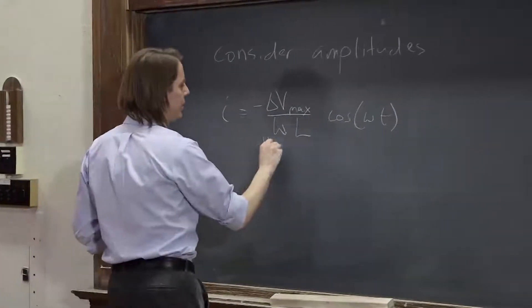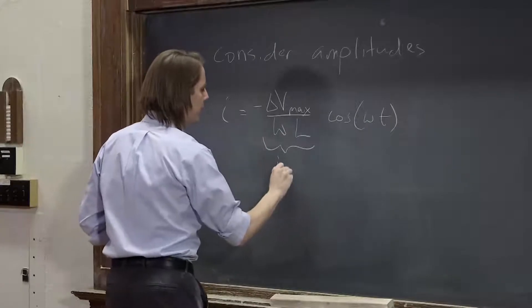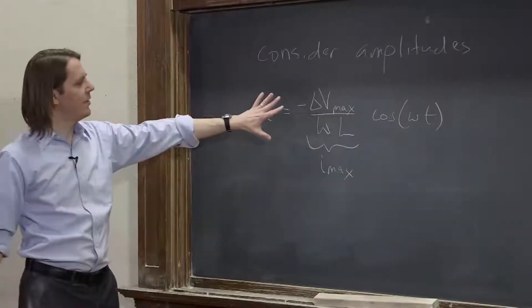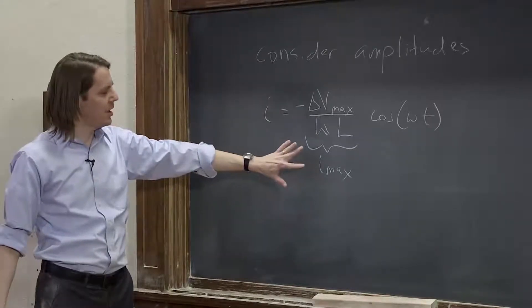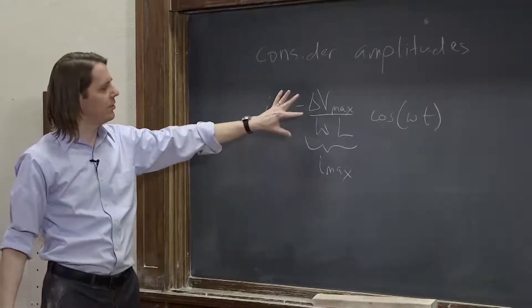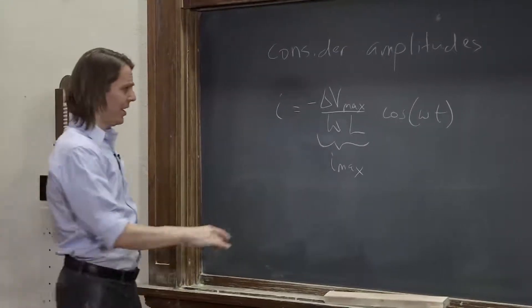So this is Imax. The negative sign also really is just a phase issue. So the maximum or the amplitude of the current oscillation is delta Vmax times omega L.